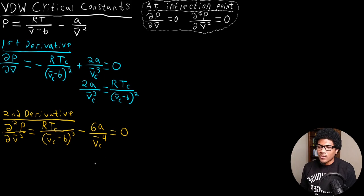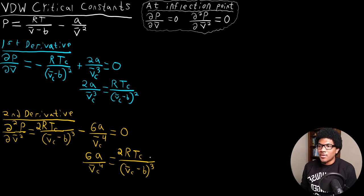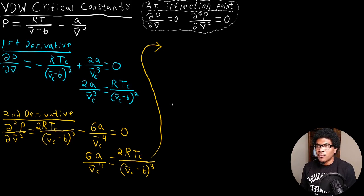We bring these terms over and set them equal: 6a over v bar C to the 4th equals 2RTC over (v bar C minus b) cubed. Now I want to factor out 2 over (v bar C minus b) from the right-hand side. That gives us 3a(v bar C minus b) over v bar C to the 4th equals RTC over (v bar C minus b) squared.